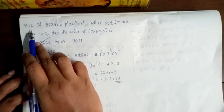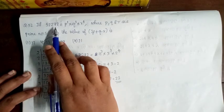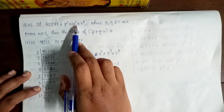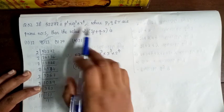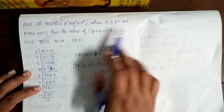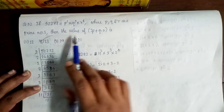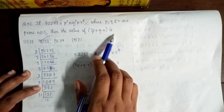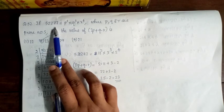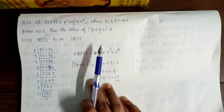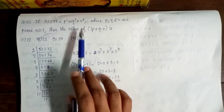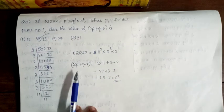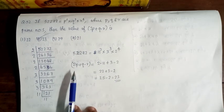Next question, 52. If 52272 equals P squared into Q cubed into R power 4, where P, Q, R are prime numbers, then find the value of 2P plus Q minus R. We use prime factorization of 52272.